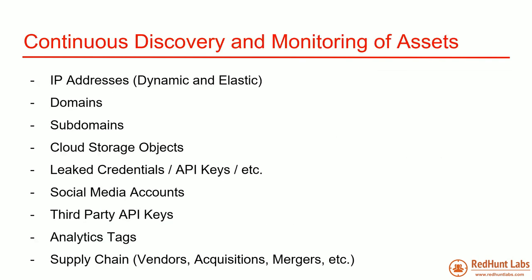Picking up the first item — continuous discovery and monitoring of assets. These are some of the assets people should be looking at: IP addresses, which could be dynamic in your data centers or elastic IPs in cloud infrastructure. You should monitor your domains, subdomains, cloud storage objects including buckets, blobs, and spaces. Also leaked credentials, API keys, social media accounts, third-party API keys, analytics stacks, and supply chain — especially if your company has acquired another company, has a merger, or has a vendor with access to internal domains. These increase your attack surface area.